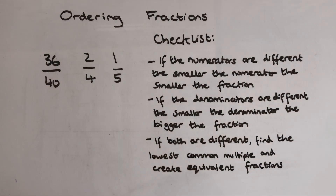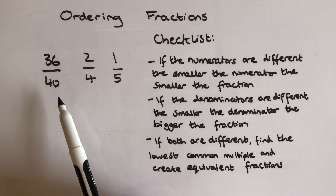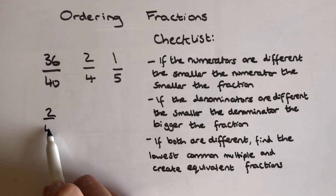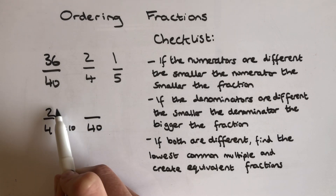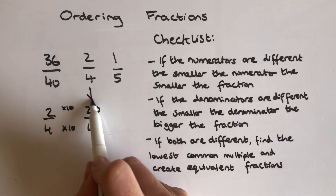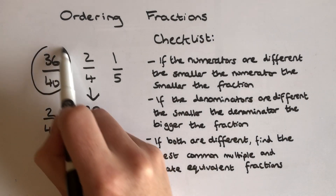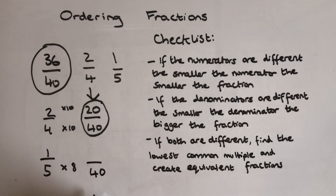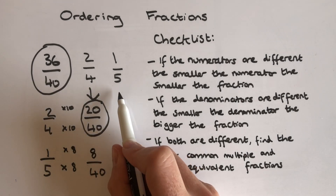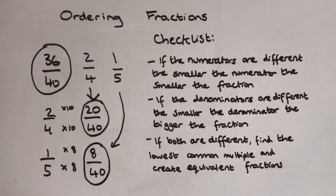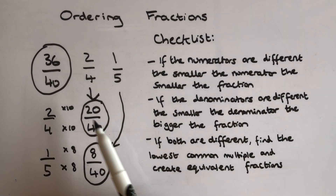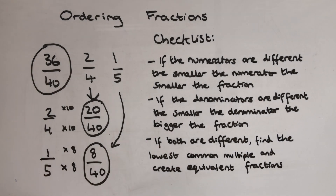So I have to find the lowest common multiple, which is going to be 40. I have to think: what did I have to multiply the denominator by to get to 40? So 4 times 10 is 40, so if I multiply the top number, 2 times 10 equals 20. So this is the equivalent fraction: 20 over 40. I'll circle them so we can see clearly. If I do the same for a fifth, I multiply the denominator by 8 to get that same denominator, 40. So 1 times 8 equals 8. So I now have three numbers to order — the numerators are different. The order is 8 over 40 is the smallest, 20 over 40 is the next, and 36 over 40 is the last one.